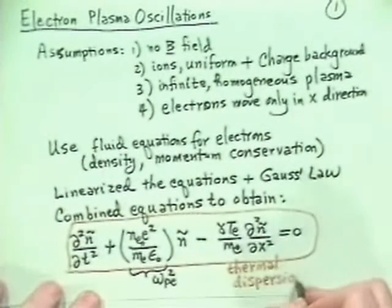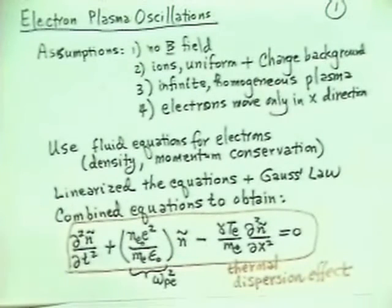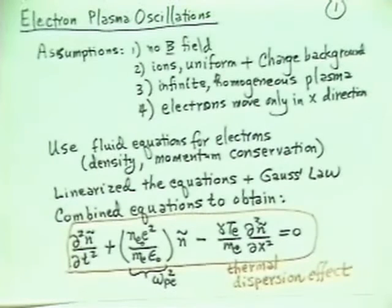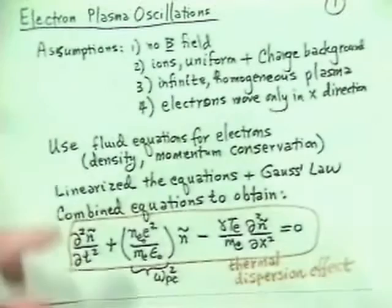We previously neglected the thermal dispersion term. Now we want to put it back in. To analyze the full equation, we posit a mode of the form e^(ikx − iωt) and substitute it in. This will turn the second time derivative into −ω², the plasma frequency term into ω_pe², and the spatial second derivative into −k².